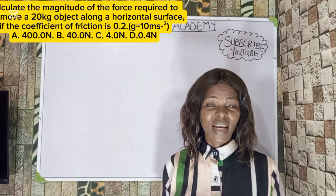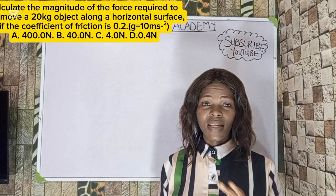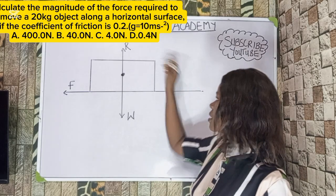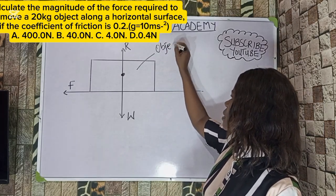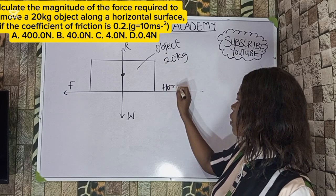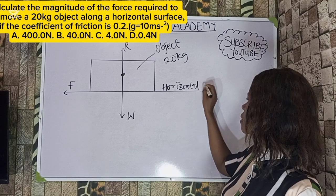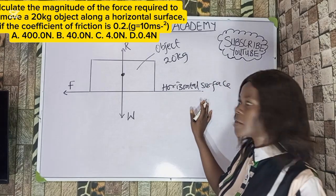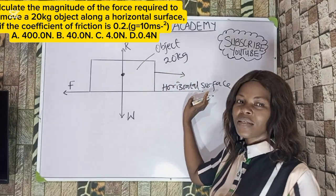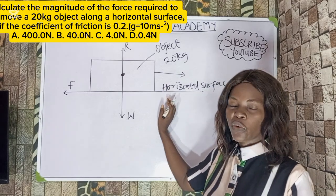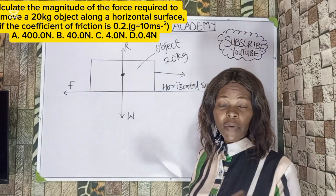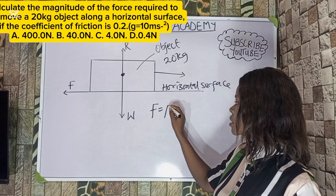You should know that friction is a force of opposition and it acts between two surfaces in contact. Let me use an illustration to explain. Looking at this diagram, this is a 20 kg object on a horizontal surface. As the body is moving in one direction, there is also a force acting opposite to that direction of motion, and that force is the frictional force. From the law of friction, F equals μR.